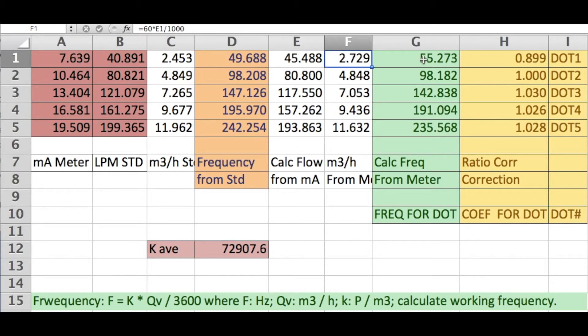And then we calculate the frequency from the meter. This is the k-factor written on the side of the meter. This frequency is D12 times F1 over 3600. So we have 55 hertz, and we got the frequency from the standard should be saying 49 hertz.